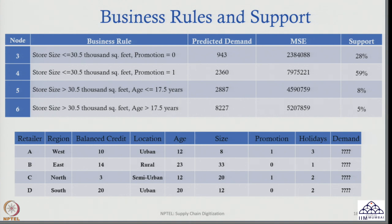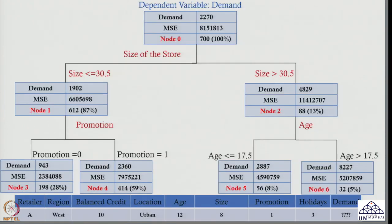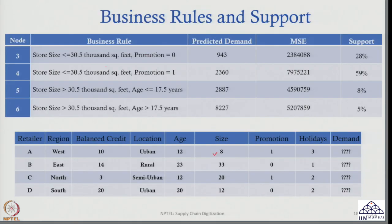Yes, I can. I have to check these 4 rules. First, I check store size. The store size is 8,000 square feet, which falls in either node 3 or node 4 — both nodes have store size less than or equal to 30.5 thousand square feet, which matches our criteria. Then, the promotional offer was given, that is promotion equals 1. So size is less than 30.5 thousand and promotion equals 1, therefore the predicted demand will be 2,360.